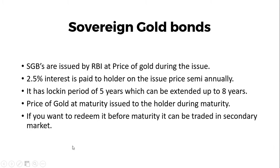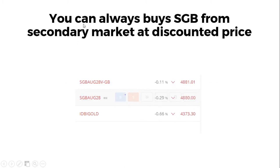If you want to redeem SGBs before maturity, you can trade them in the secondary market. However, the disadvantage is that in the secondary market SGBs are always traded at a discount because buyers know you need liquidity. So if you're planning to buy an SGB, it's better to buy from the secondary market, and if you're selling, better to redeem with RBI. Only invest in sovereign gold bonds if you're ready to hold for five to eight years.